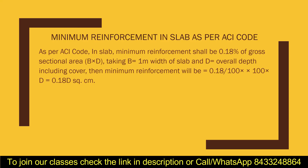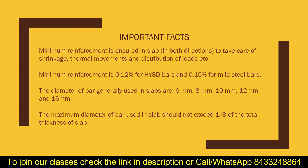According to the ACI code, the minimum reinforcement in a slab should be 0.18 percent of the total cross-sectional area. For example, if the width of the slab is 1 meter and the overall depth is d, you divide 0.18 by 100 and multiply by the width and the overall depth. In millimeters, using a width of 1000 mm, that gives you 0.018d.